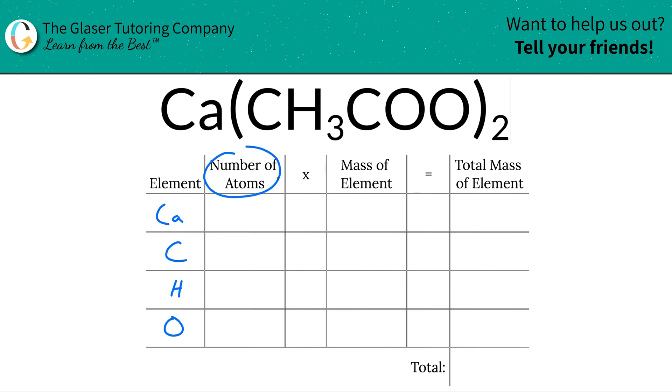Next is the number of atoms. Now we're going to take into account the number of atoms that we have of each particular element. So for calcium, there's only a subscript down here of a one, and what that means is that there's one calcium atom.